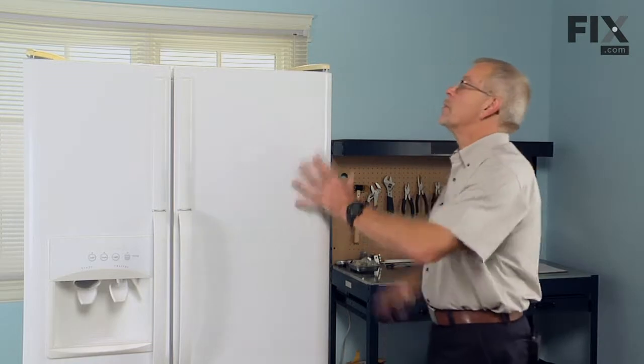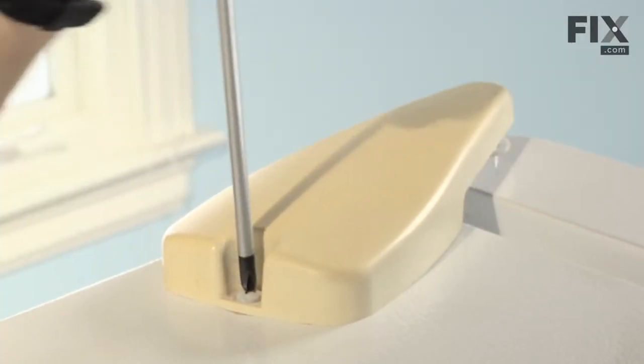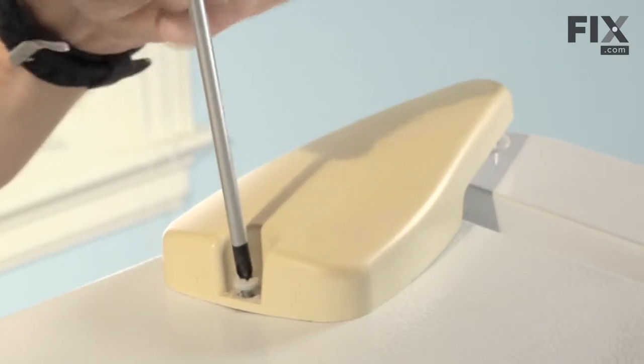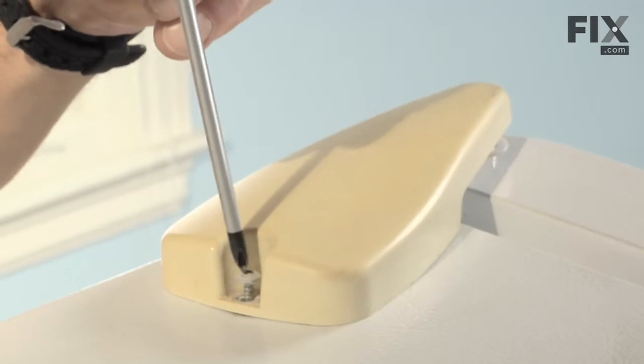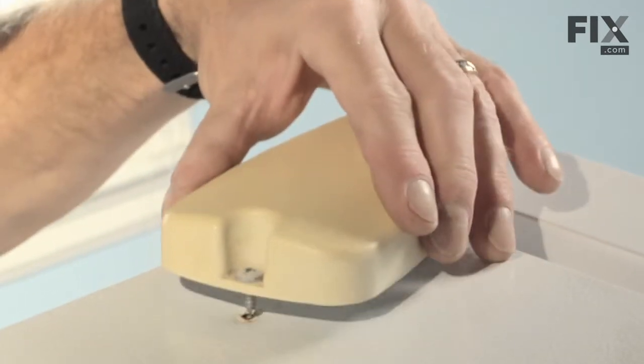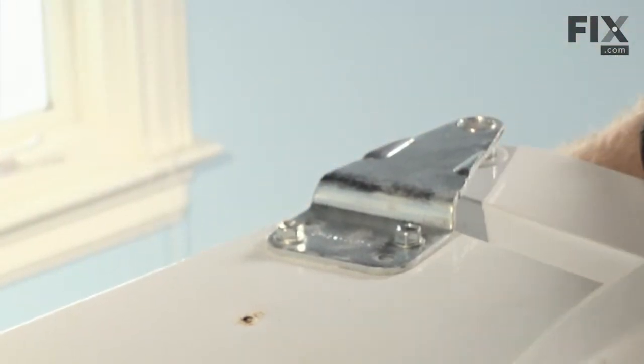Now the first step we need to do is remove the hinge cap with a single Phillips screw at the rear of the cover. Just remove that, lift the hinge cover off and that will expose the two three-eighths bolts that hold the top hinge to the cabinet.